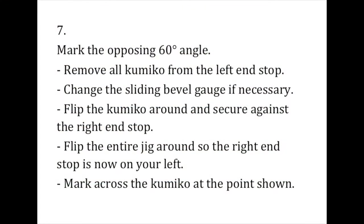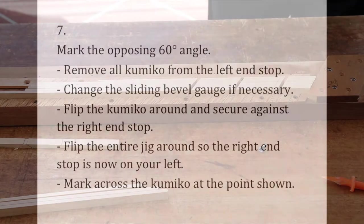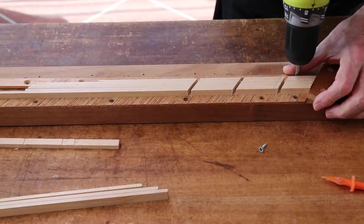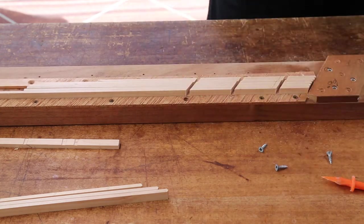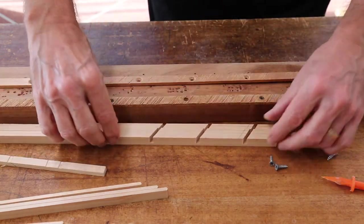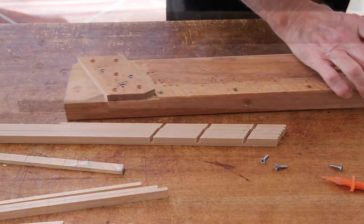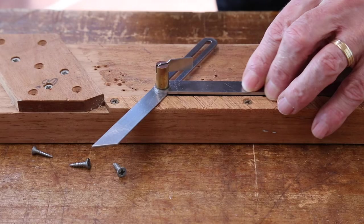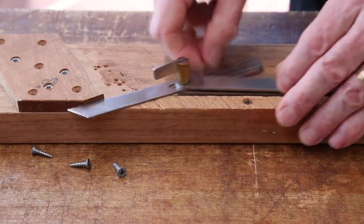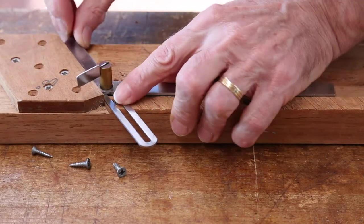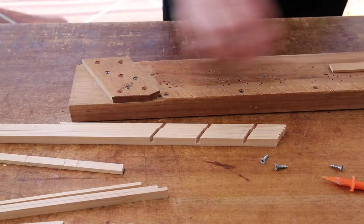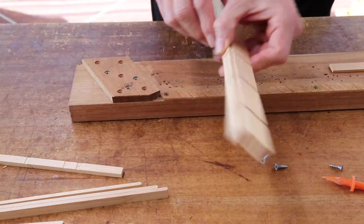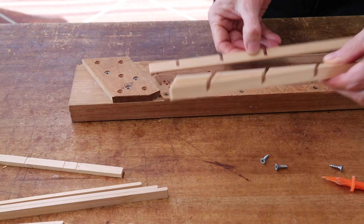This next process is the critical part where we'll be marking the opposing angle, so you should follow along carefully. Remove all of the kumiko from the left hand end stop. If necessary, adjust your sliding bevel gauge so that it is now at the correct angle. If you can use your gauge on both sides, you don't need to do this.